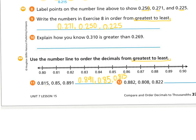Let's double check on the number line. My first one was 891 thousandths, so I go to eighty-nine and jump one over. Then I find eighty-five hundredths. And finally eight hundred fifteen thousandths — I find eighty-one and go five over: one, two, three, four, five, as tiny as I can be. Did I go from greatest to least? Yes, I did.